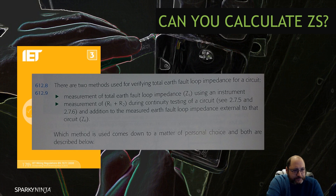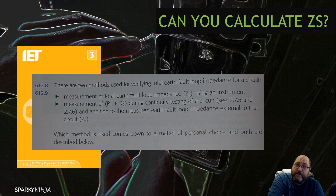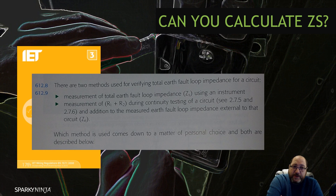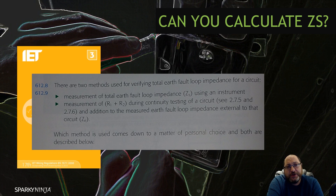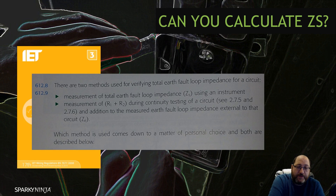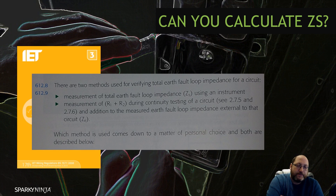Guidance Notes 3 says, in the middle of the document, that there are two methods used for verifying the total earth fault loop impedance. One is measurement of the total earth fault loop impedance using an instrument. The other is measurement of R1 plus R2 during the continuity test, and addition of the measured earth fault loop impedance external — the ZE. So it's saying ZS equals ZE plus R1 plus R2.